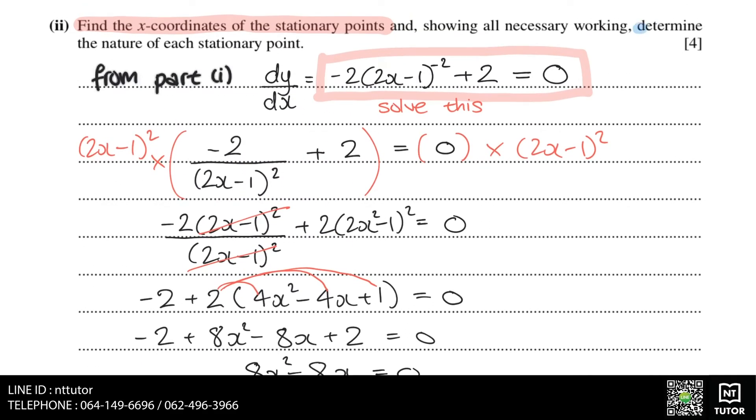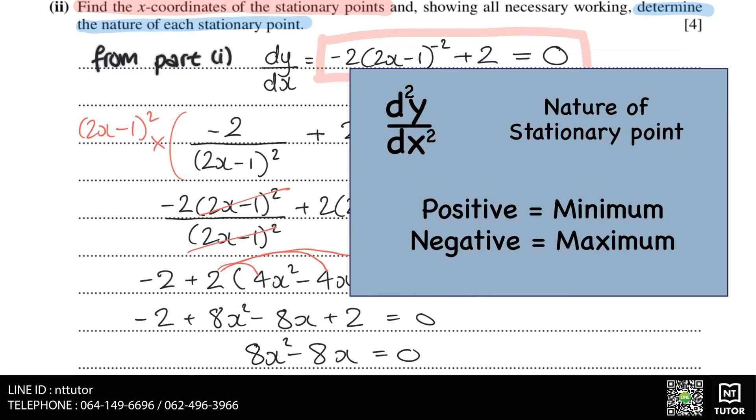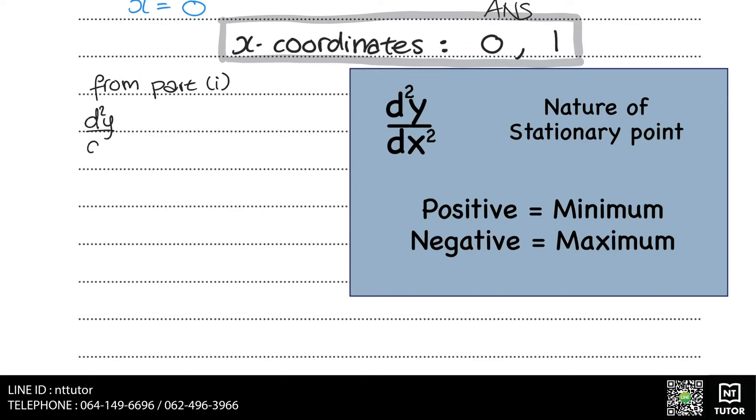Next, we need to determine the nature of each stationary point. Is it a maximum or is it a minimum? And we can do this by finding d squared y over dx squared, which we already got from the first part.